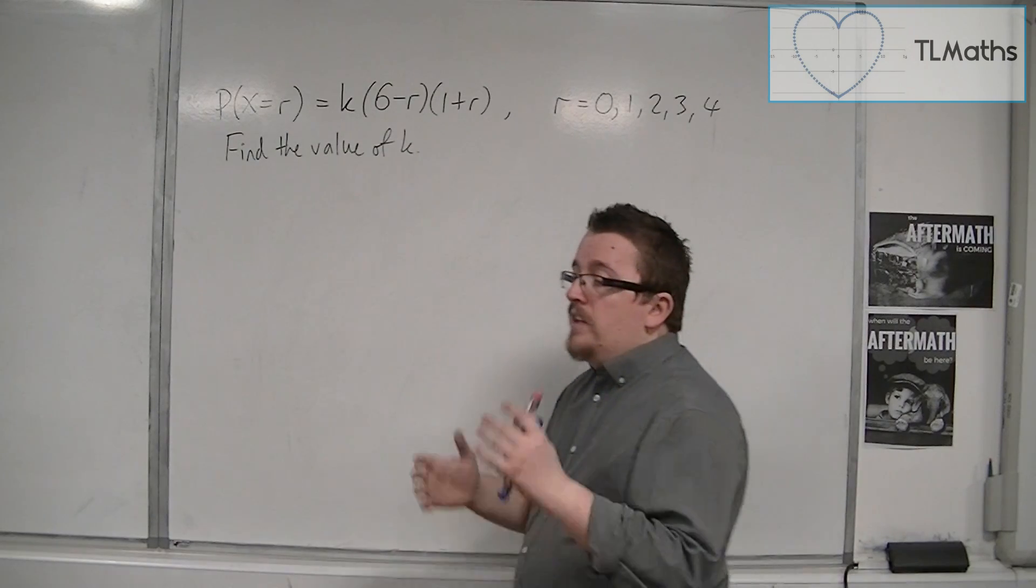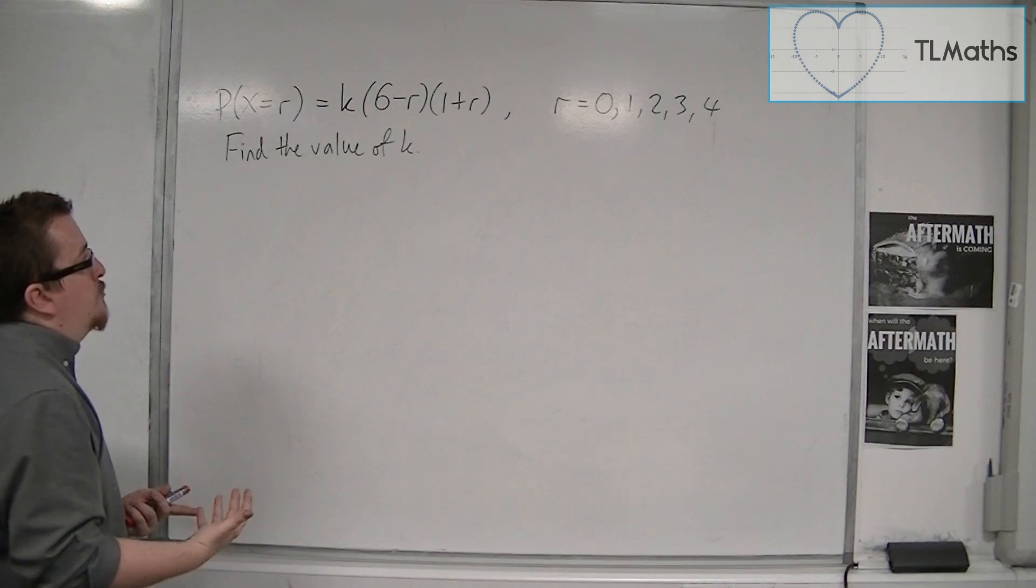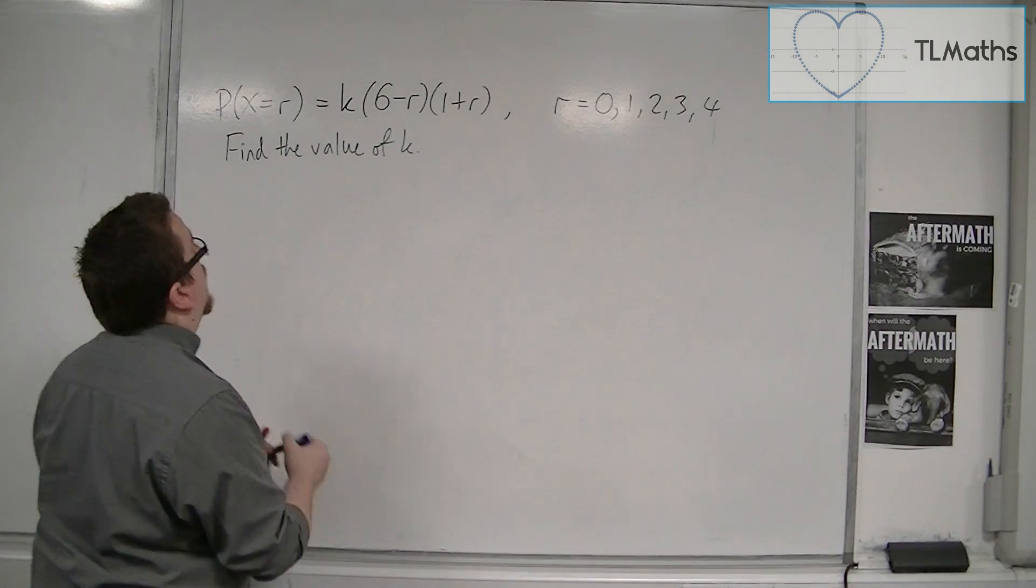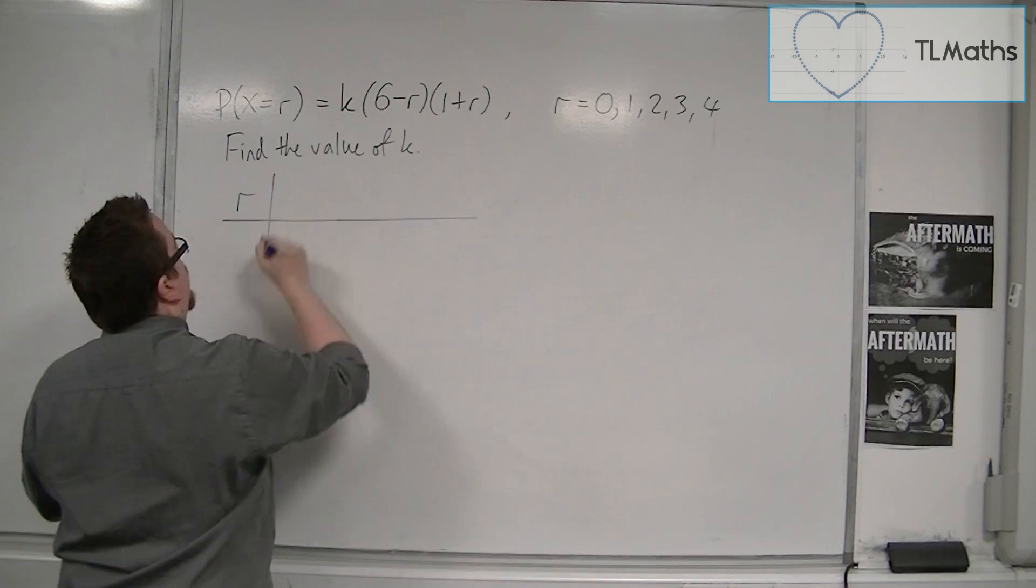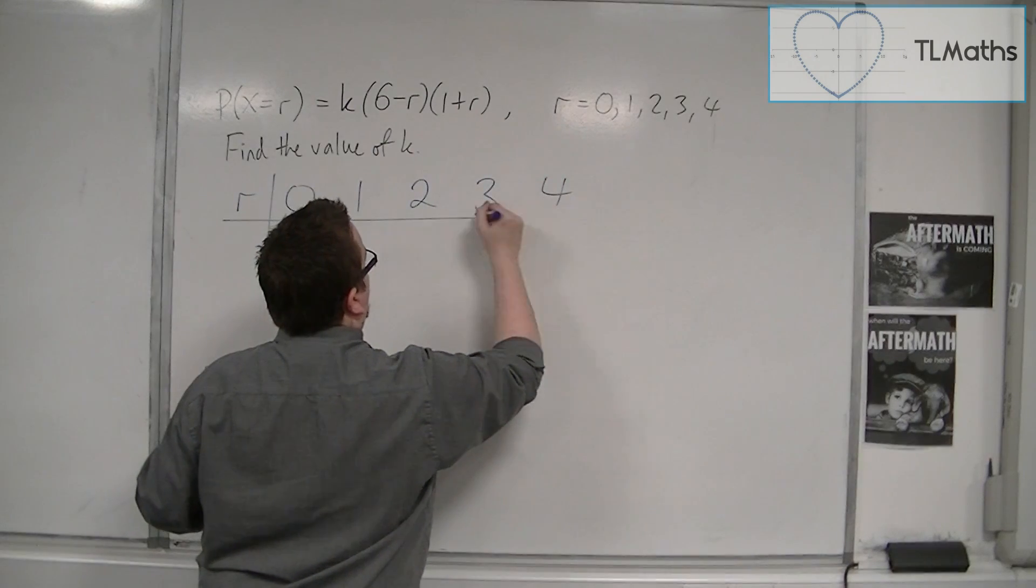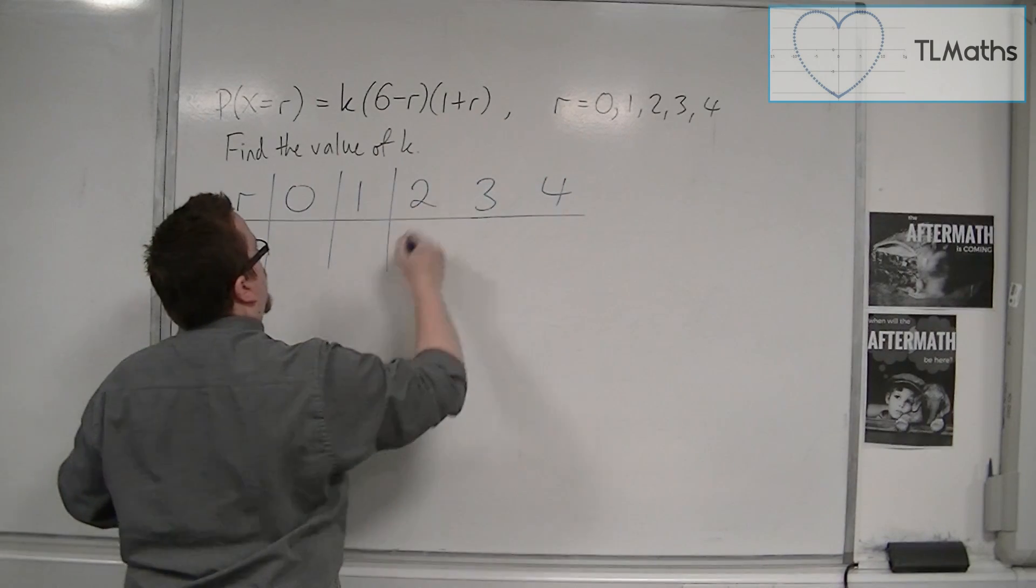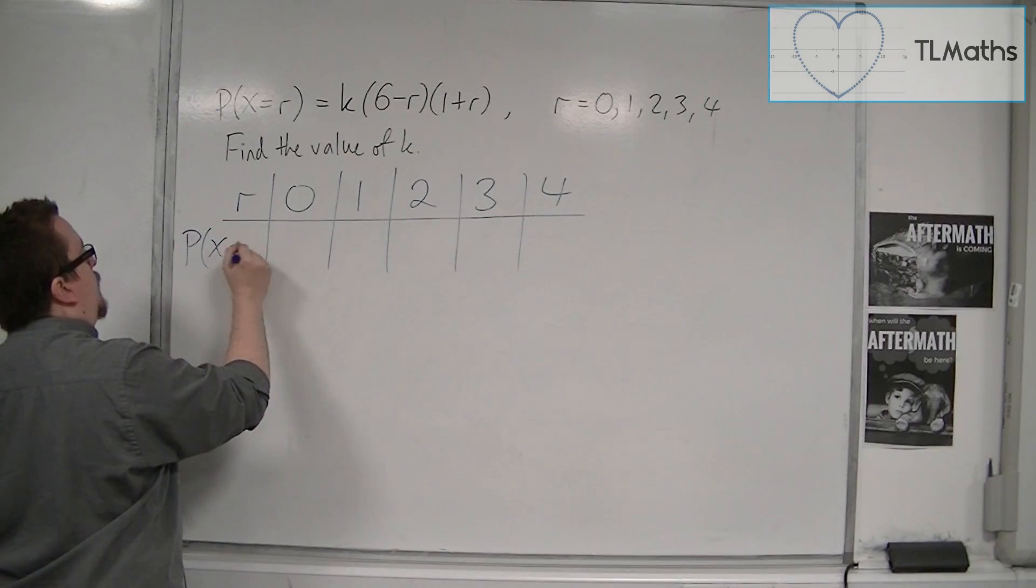How we're going to do this is we're going to draw the tabular form of this discrete probability distribution. So let's have our values of r in the top row: 0, 1, 2, 3, and 4. And in the bottom, we're going to have the probability of x being equal to r.